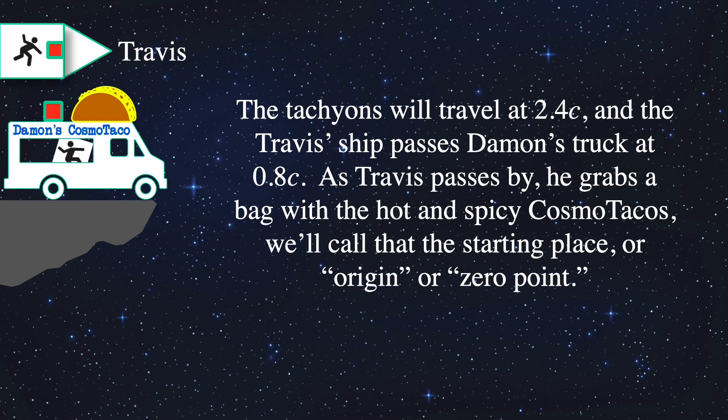decide to try out their tachyon antitelephone to see if it'll help them with Damon's Cosmo Taco business. Once again, we're going to be doing the Tolman Paradox. The tachyons and the antitelephone machines are going to travel at 2.4 times the speed of light. As for Travis, he wants some tacos for that long trip to the very far away space station on Alpha Centauri.